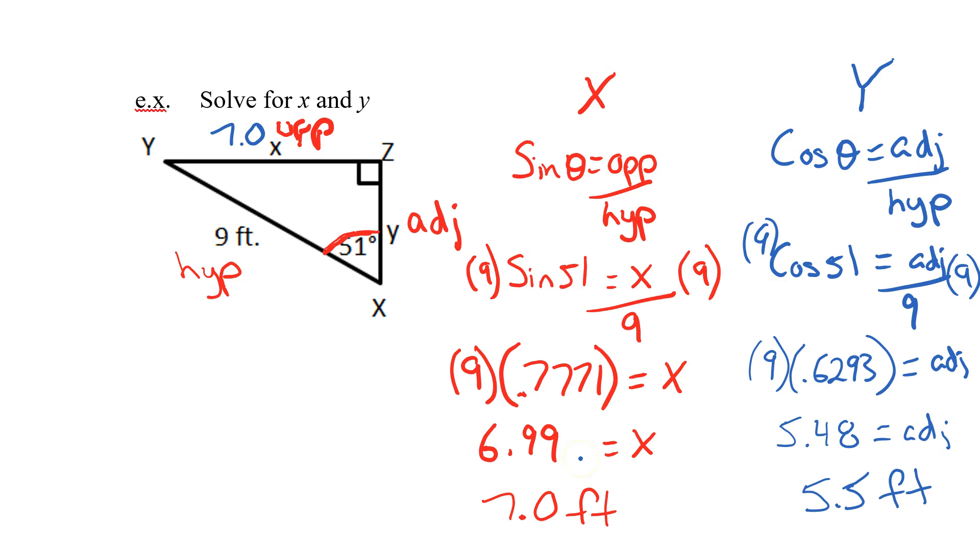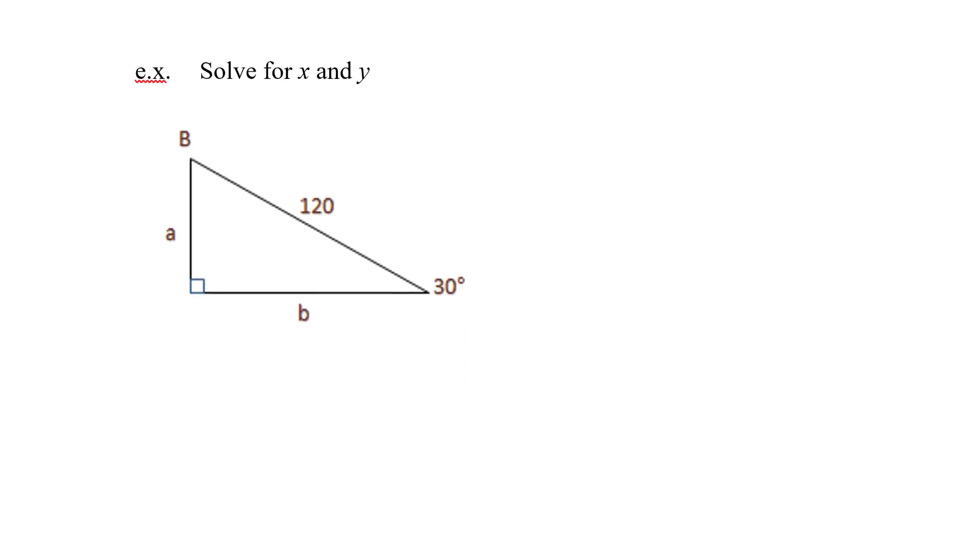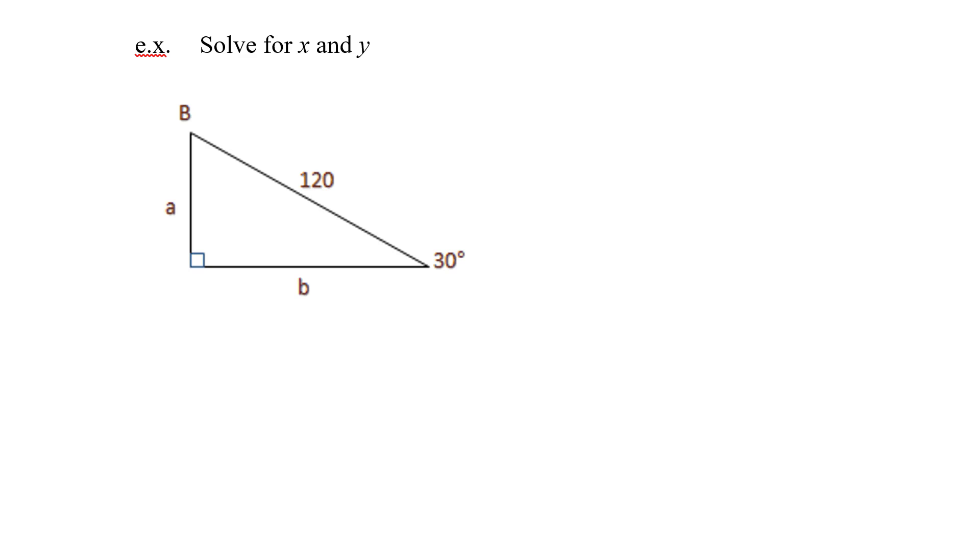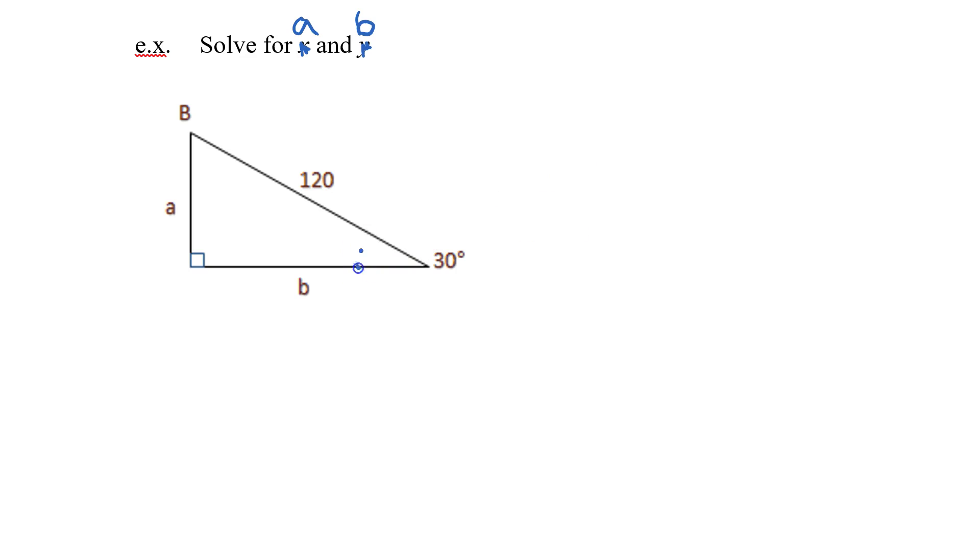So sine, opposite hypotenuse. Cos, adjacent hypotenuse. Let's go back to the next page. Now it says solve for x and y, and I realize they're not x and y, but they're rather a and b. On this one, the diagram is a little bit more difficult to understand. The angle is actually outside the triangle, so I'm going to rewrite that. 30 is right here. Labeling hypotenuse across from the 90. Opposite, through the angle, through the triangle. Leaving this to be my adjacent.